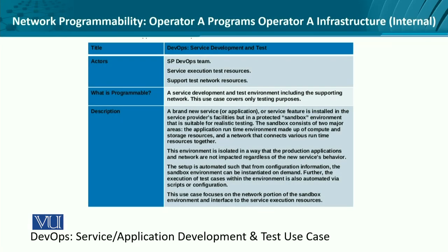Let's look at a specific example for DevOps — that is, development and operation — where we have a service that we wish to introduce and test. In this scenario, and in subsequent scenarios, this would be the standard template: we'd have a title of the requirement, the actors, what is going to be programmed, what is going to be programmable, the description of the problem itself, the programmability aspect, the network programmability, and the advantages.